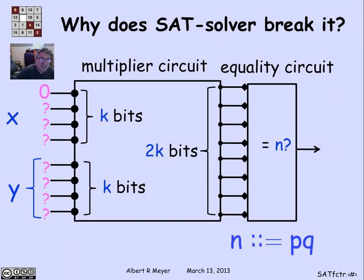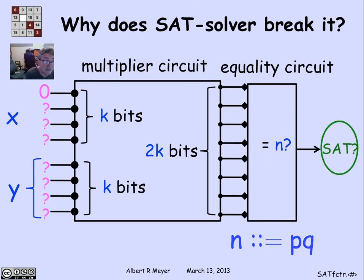I'm going to take the circuit and set the first of the input bits to 0. Then I'm going to ask the SAT solver: is there a way to set the remaining input bits to get a 1 out of this circuit with that 0 fixed? The SAT solver says yes — there is a way to fill in the remaining digits and get an output 1. What does that tell me? It tells me that there is a factor that starts with 0. So we fix that 0, knowing it's possible to fill in the remaining digits with bits of factors x and y that multiply to equal n.